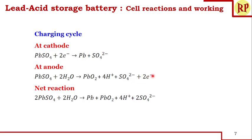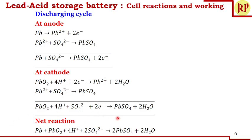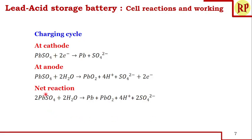So the net reaction during charging is also reversed: 2PbSO₄ + 2H₂O → Pb + PbO₂ + 4H⁺ + 2SO₄²⁻. The lead sulfate which formed around the electrodes is converted back to lead and lead-dioxide during the charging cycle. These electrodes are then ready again for giving us electricity. This is how a secondary battery acts both as an electrochemical and electrolytic cell.